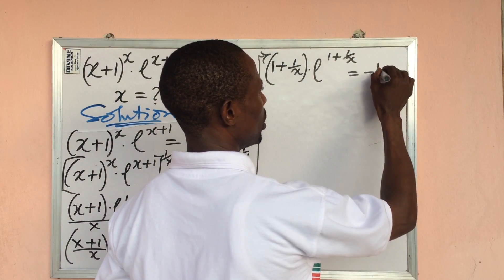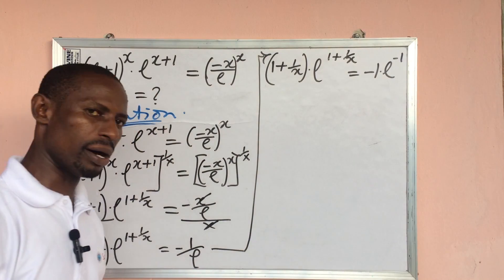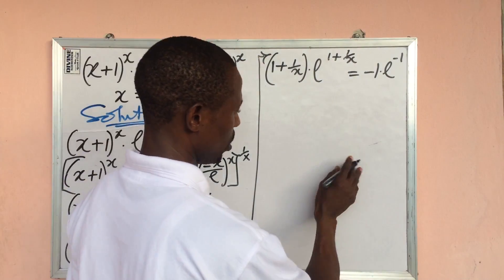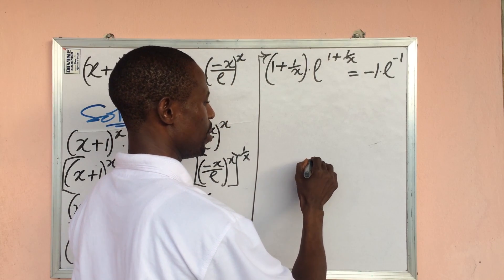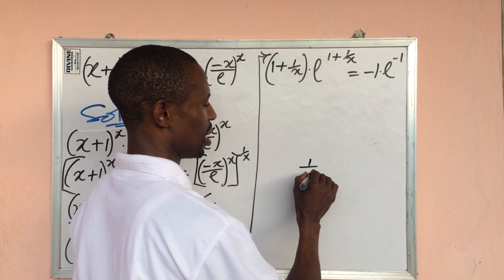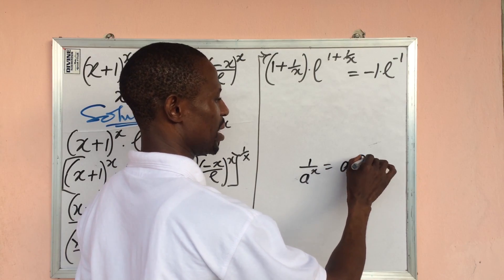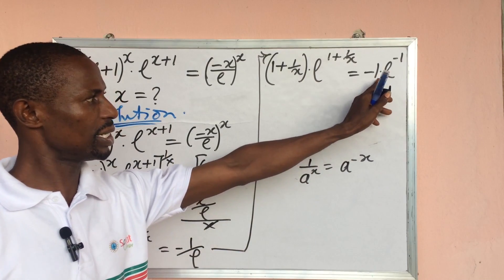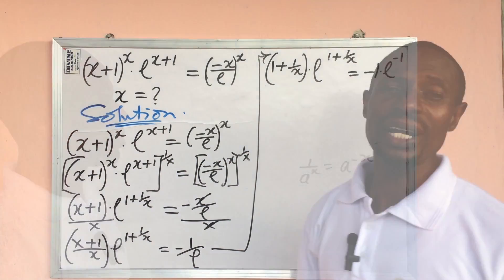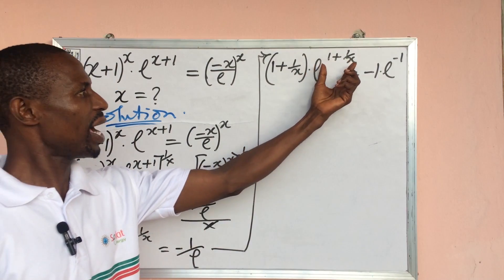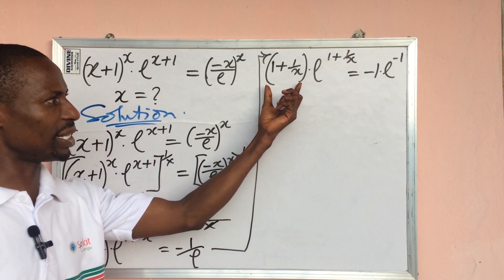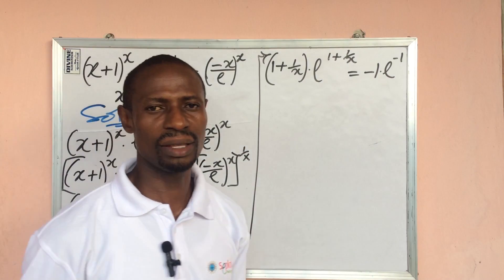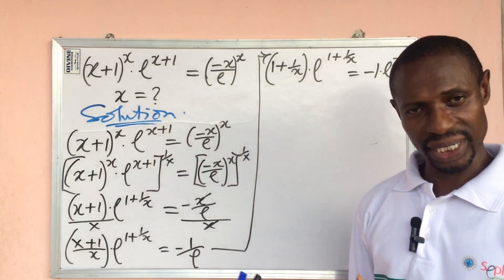Rewriting the right-hand side, we apply the law of indices — 1 over a to the power of x equals a to the power of minus x — giving us minus 1 dot e to the power of minus 1. Now notice the beauty: what we have at the exponent on the left is exactly what we have at the base there, and same on the right. So we can introduce the Lambert W function to both sides of the equation.